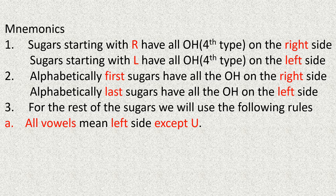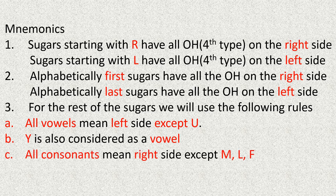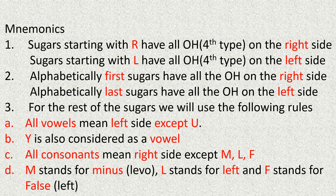Rule number three has the following points: all vowels mean left except U; Y is also included as a vowel and also means hydroxyl groups on the left side; all consonants mean right side except M, L, and F. In today's video on mnemonics for ketoses, we have included another letter in the exceptions list: F. M stands for minus, used for levo sugars; L stands for left; and F stands for false, which will also mean a left side hydroxyl group in this video. The rest of the rules are all the same as in my previous video.